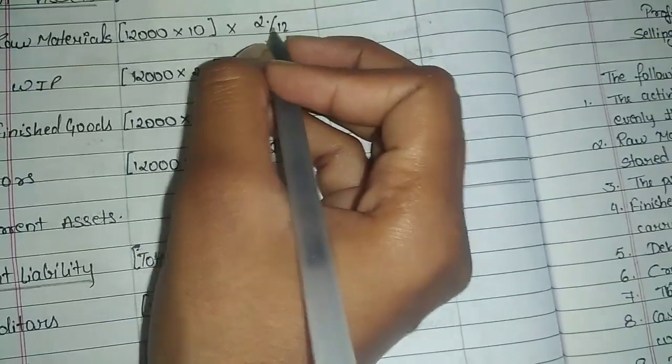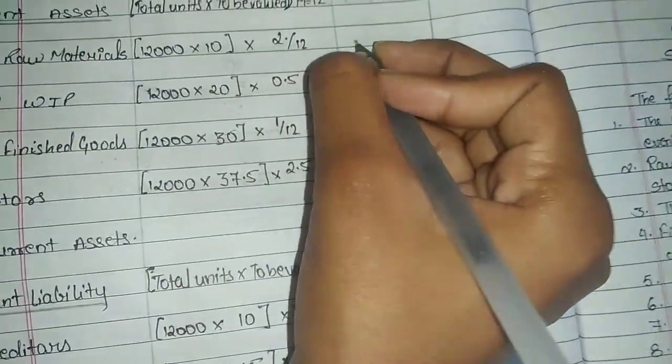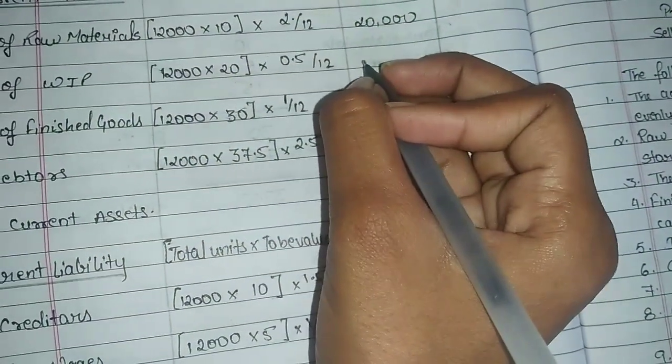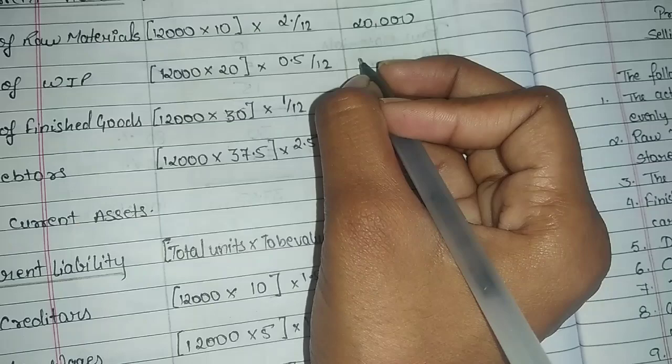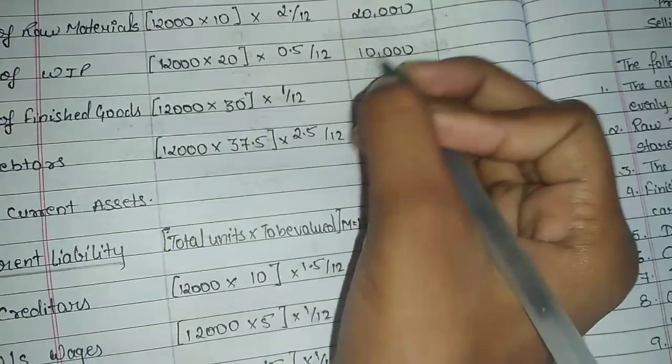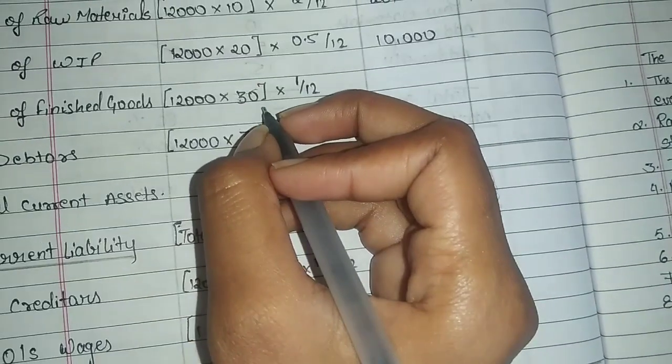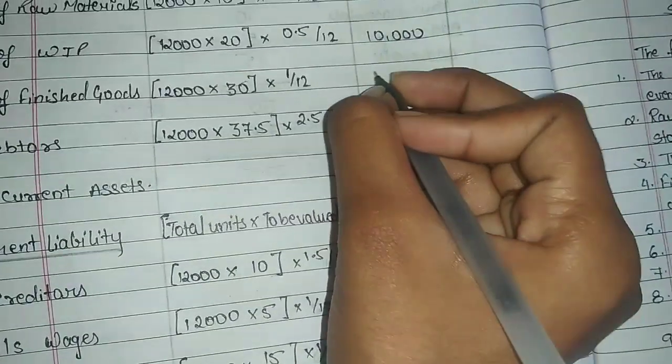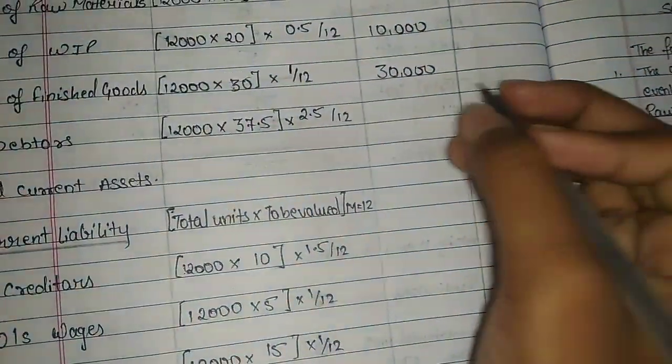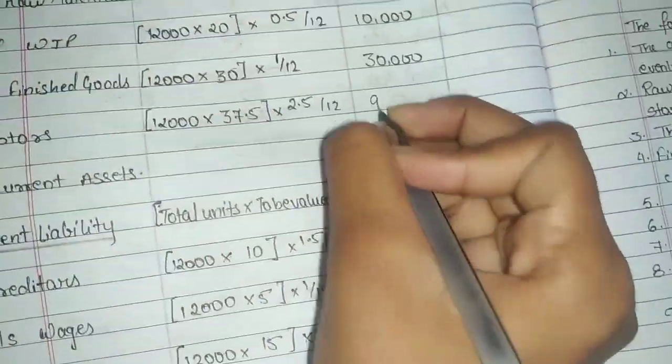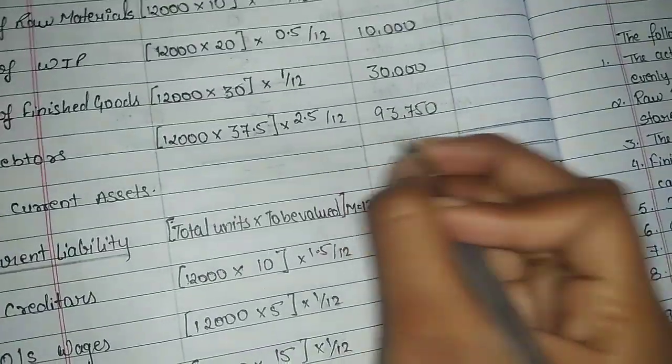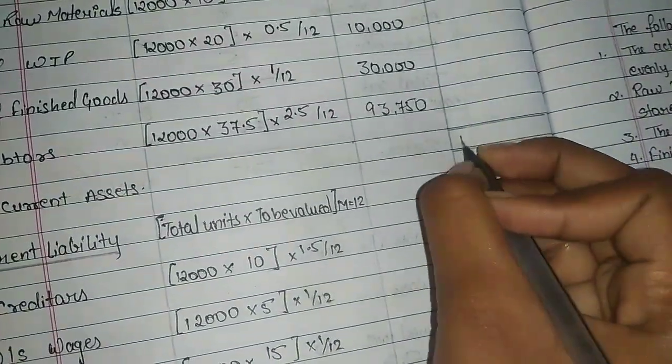Final amounts: 12,000 into 10 into 2 divided by 12 is 20,000. Stock of WIP is 10,000. Finished goods 30,000. Debtors 93,750.